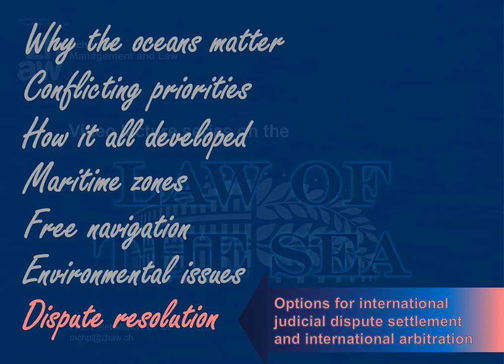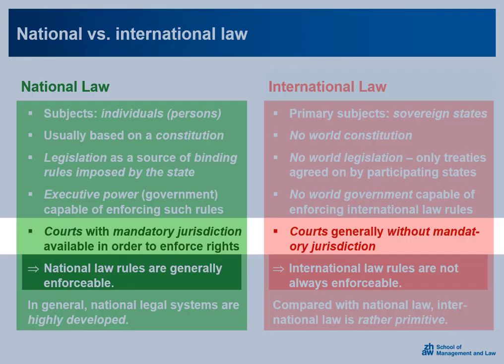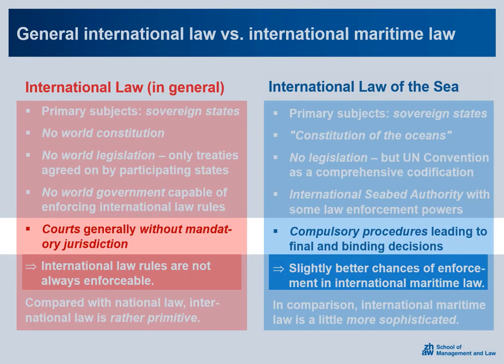As we know, enforcement can be quite problematic in international law. One reason for this is that, as a general rule, international courts — unlike national courts — do not have mandatory jurisdiction. Generally, an international court is competent to deal with a case only if the state parties involved have agreed to submit their dispute to that court. However, in the international law of the sea, the 1982 UN Convention has taken a new approach. It has put in place a system of compulsory dispute settlement procedures capable of leading to final and binding decisions. While not perfect, this is a remarkable attempt at improving the enforceability of international law rules.